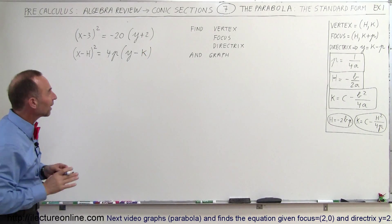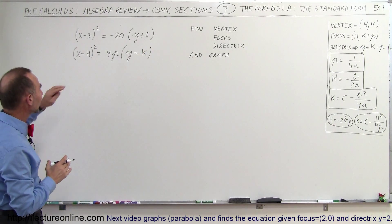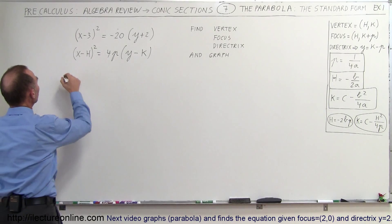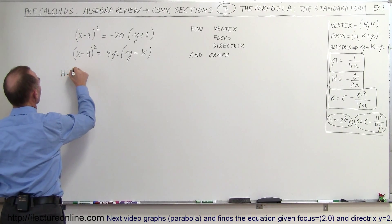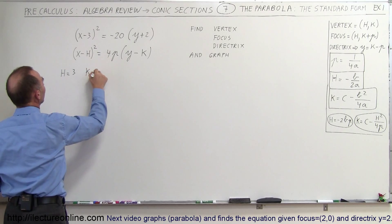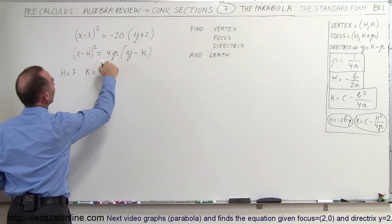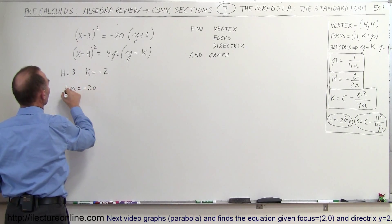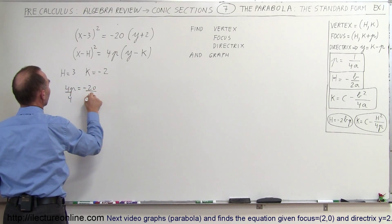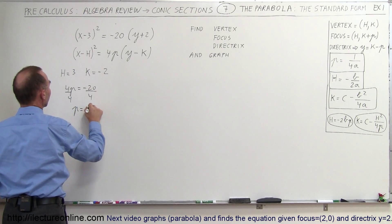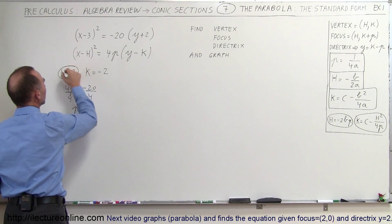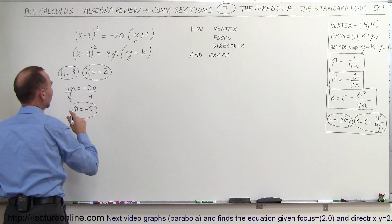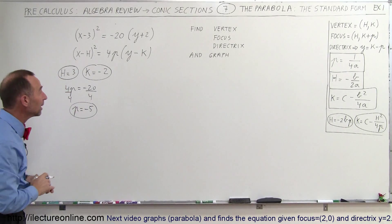All right, so having done that, we can now relate to that and we can say, well, in that case, we know that h is equal to 3, k is equal to negative 2, and here we can see that 4p is equal to minus 20. If we divide both sides by 4, we can then see that p is equal to minus 5. So we have h equals 3, k equals negative 2, and p equals negative 5. So that's the first thing you do is find h, k, and p.